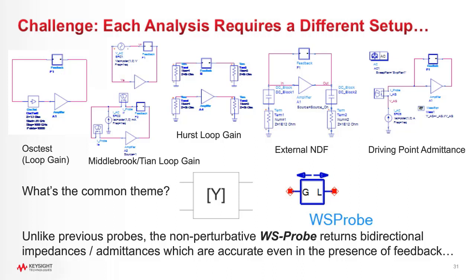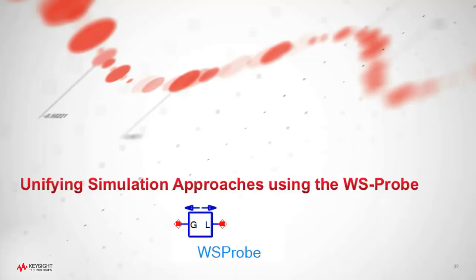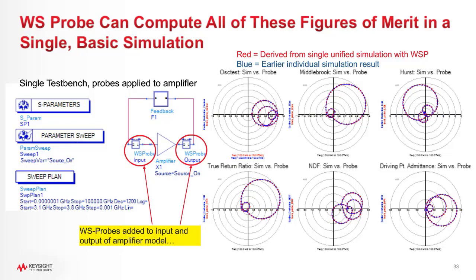What Tom Winslow was able to contribute — if you look at the common theme for all of these, it really comes down to the admittance network matrix. Tom derived a probe that, unlike previous probes, returns bi-directional impedances and admittances which are accurate even under the presence of feedback. Some previous probes like the S-probe are useful, but under feedback they break down and don't give accurate results. Since stability problems arise from gain in feedback, if you can't analyze the impedances in the presence of feedback, a probe isn't very useful.